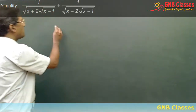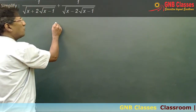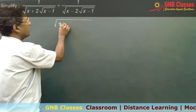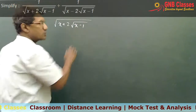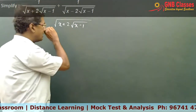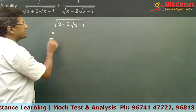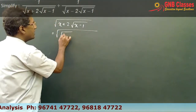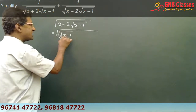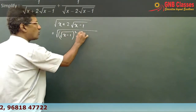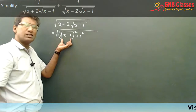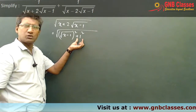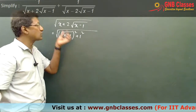In this problem, first of all we will try to simplify the expression x plus 2 under root x minus 1. What I am trying to do here is write x as under root x minus 1 whole square plus 1 squared, because under root x minus 1 whole square gives you x minus 1, and plus 1, which yields x only.